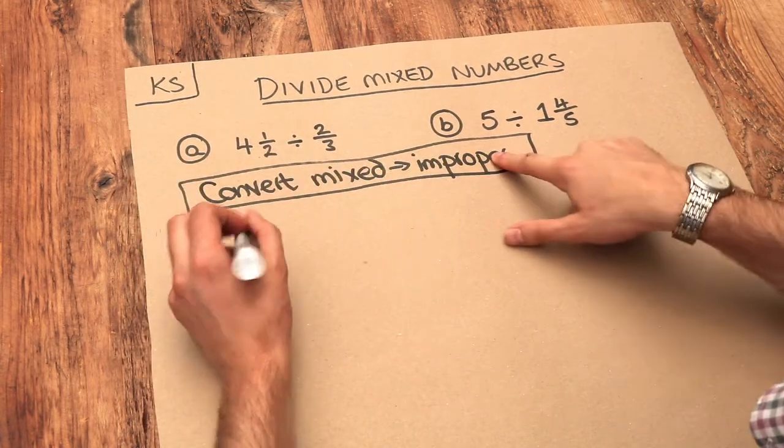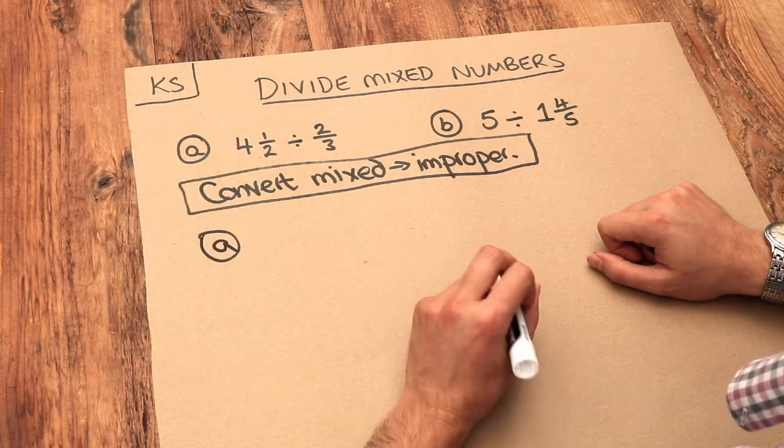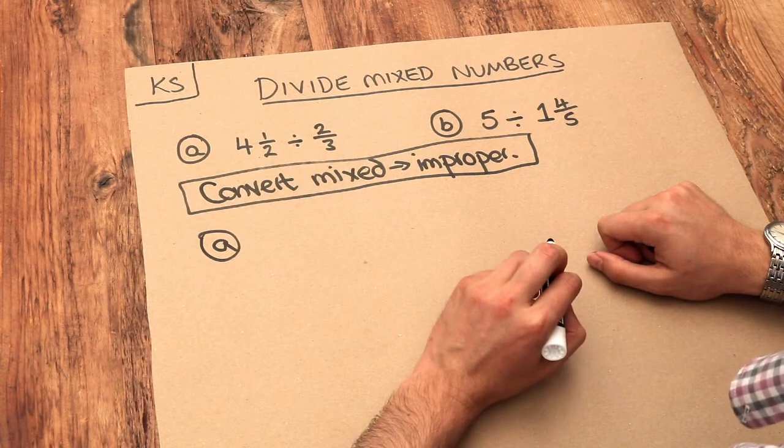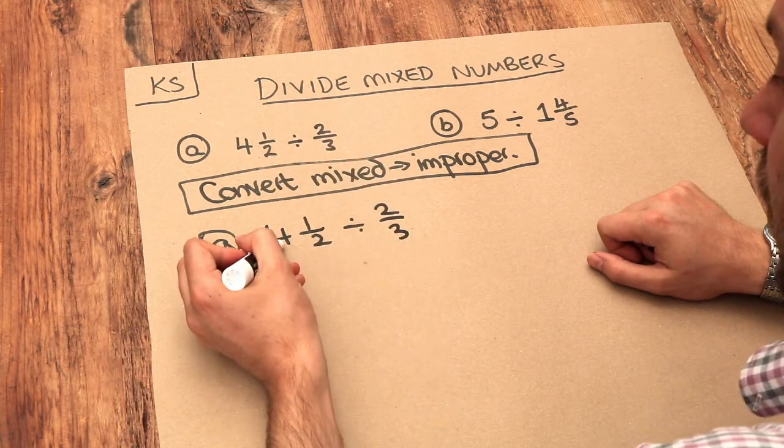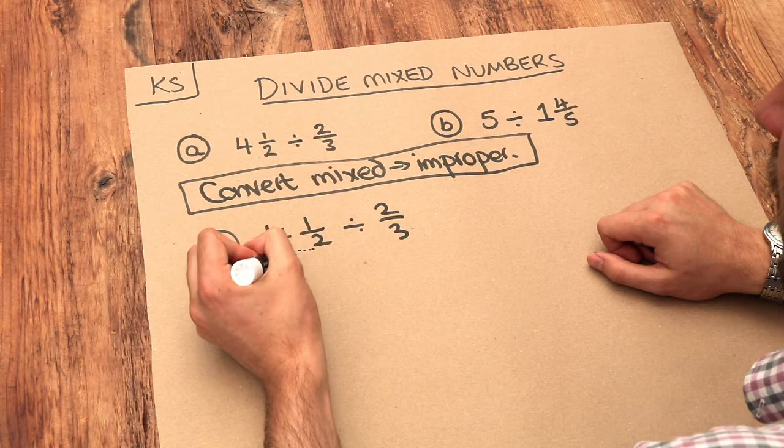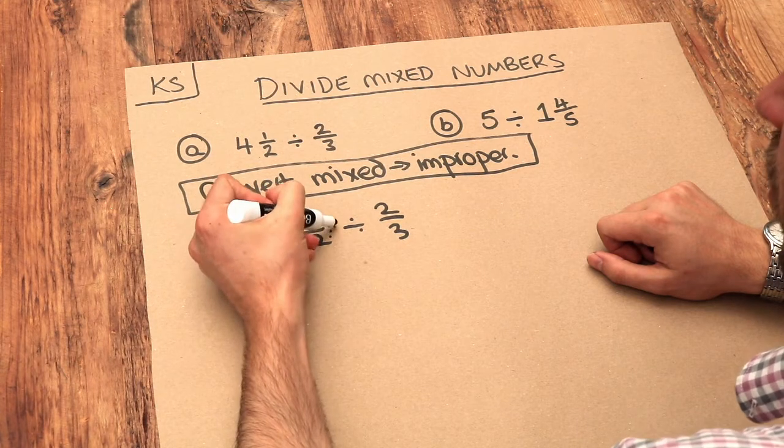So let's use this approach here with part a. We convert this to a mixed number. Now do you remember the way we do that is to multiply the whole part by the denominator and to add on the numerator.